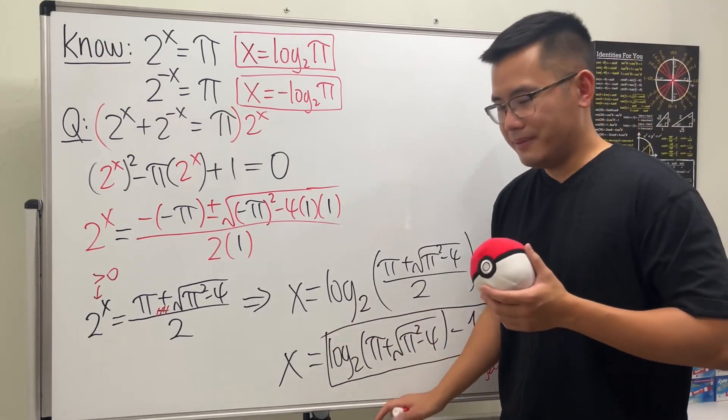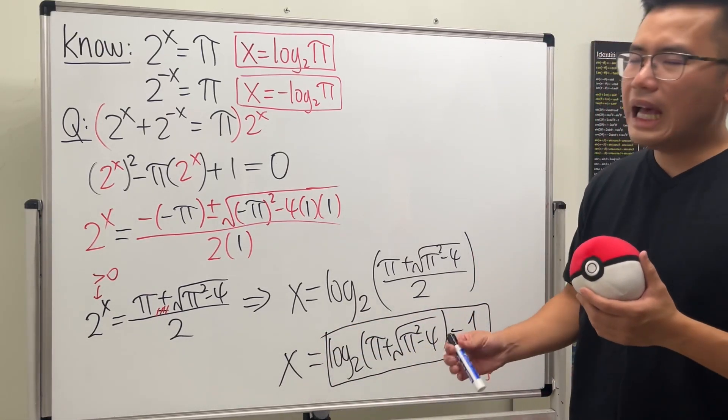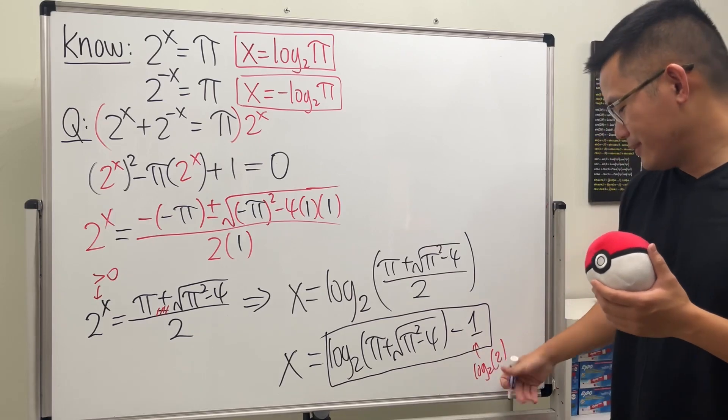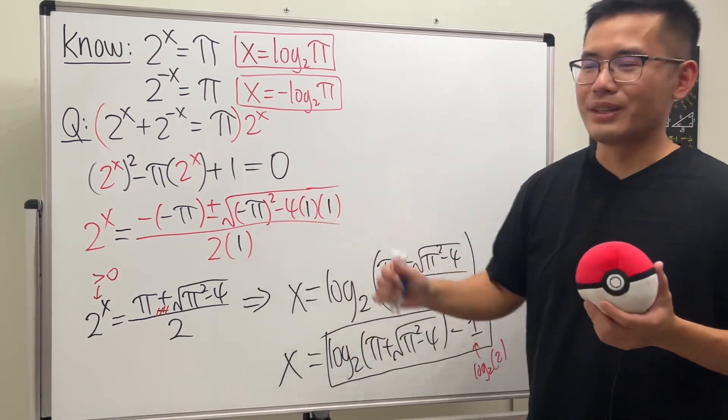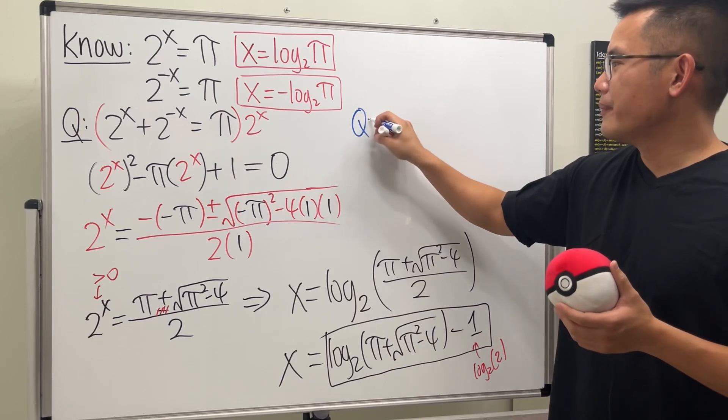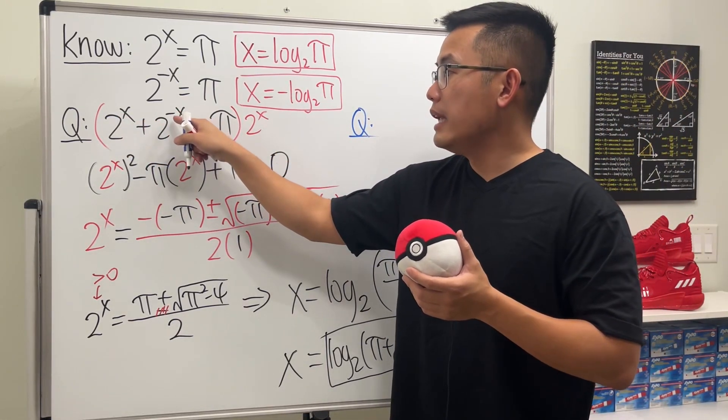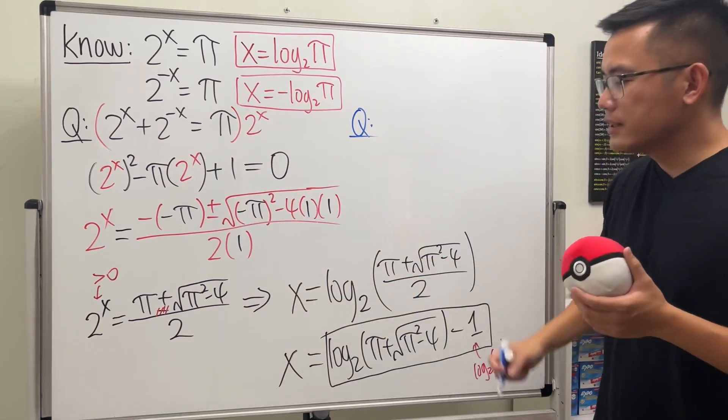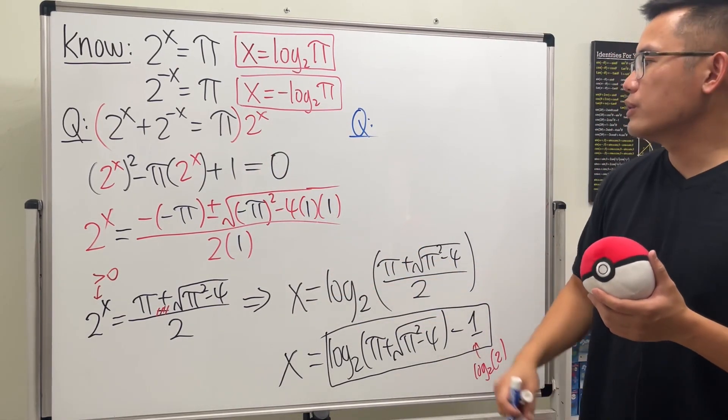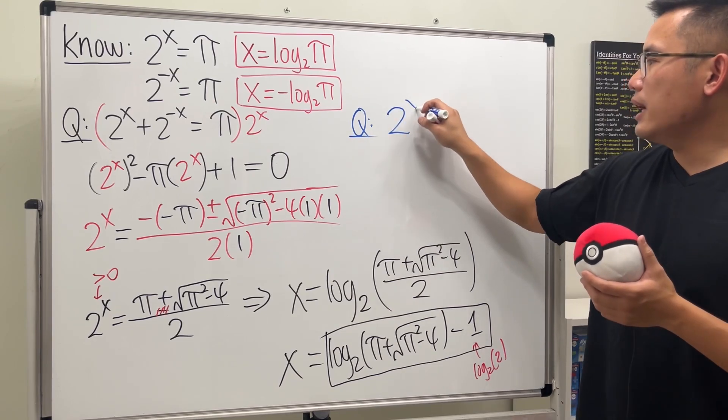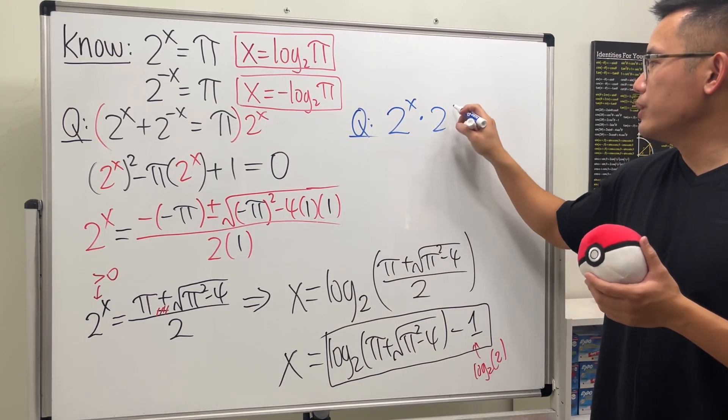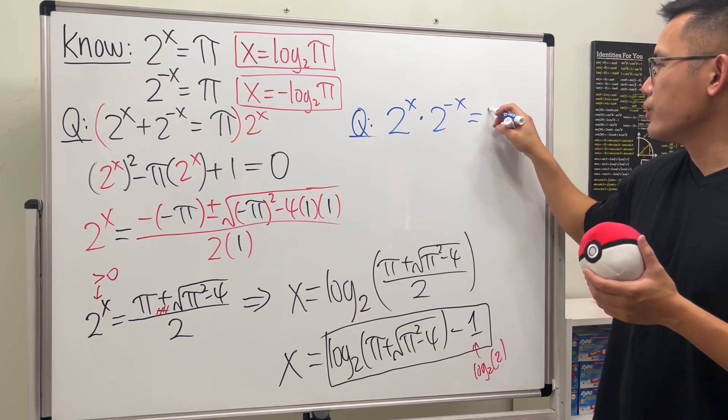Pretty cool, I will say. And before you guys go, I have a question for you guys. I did one for you. Now you do another one, the blue one here. Earlier, we saw that when we do 2 to the x plus 2 to the negative x is equal to pi, here we have a solution for it. Now, question for you guys is, can you solve 2 to the x times 2 to the negative x equals pi?